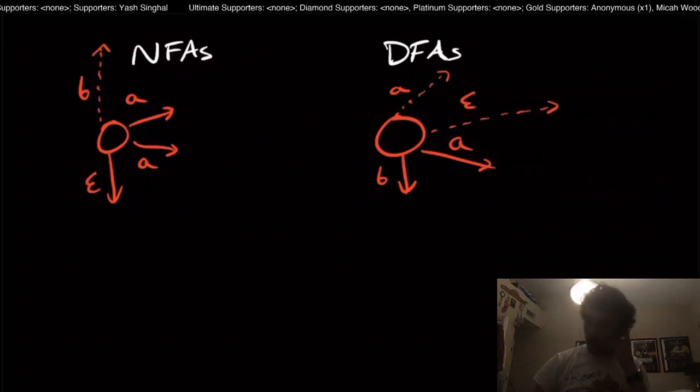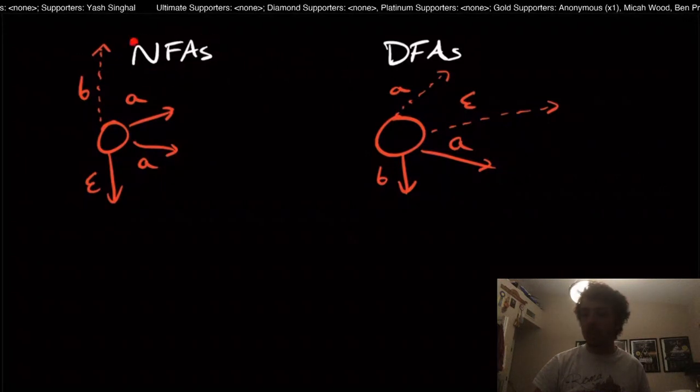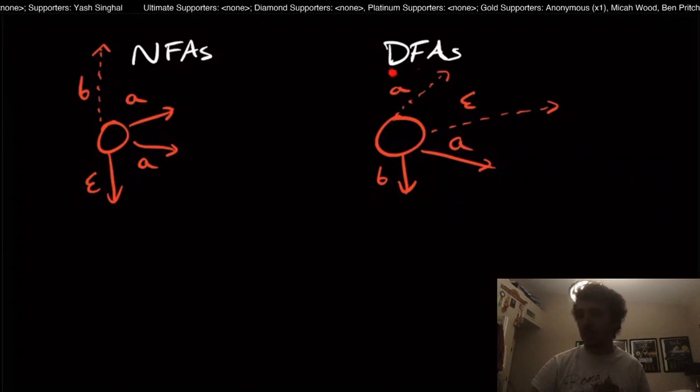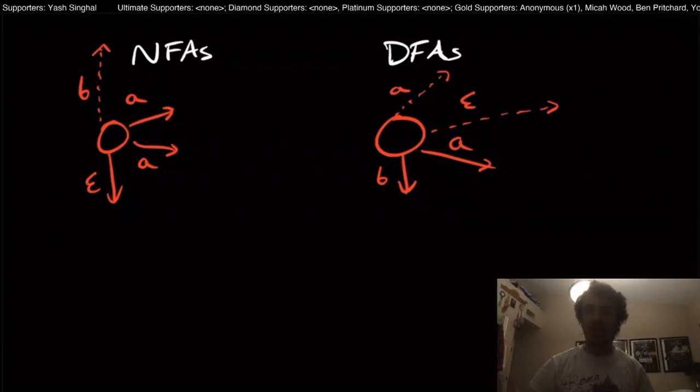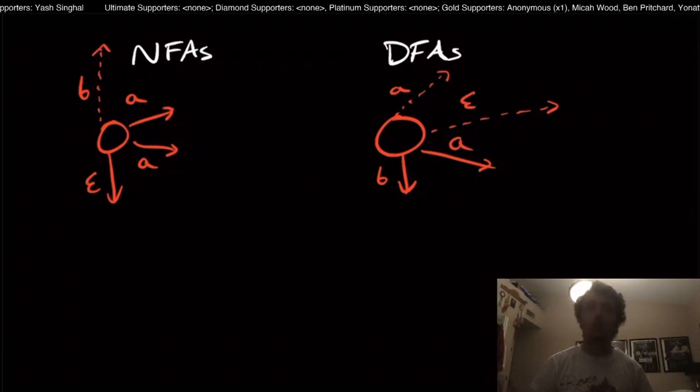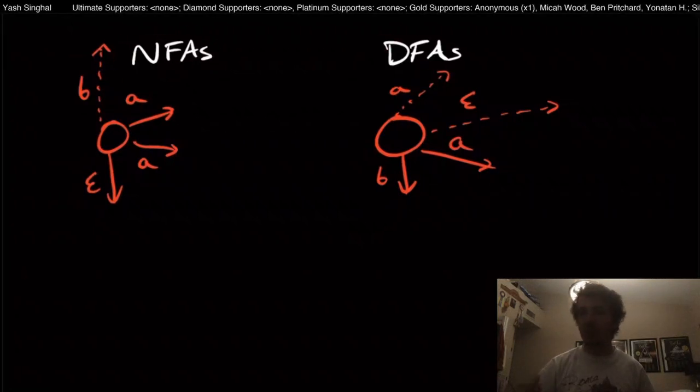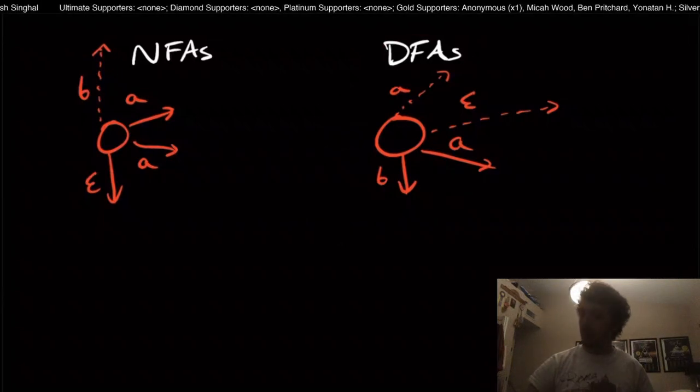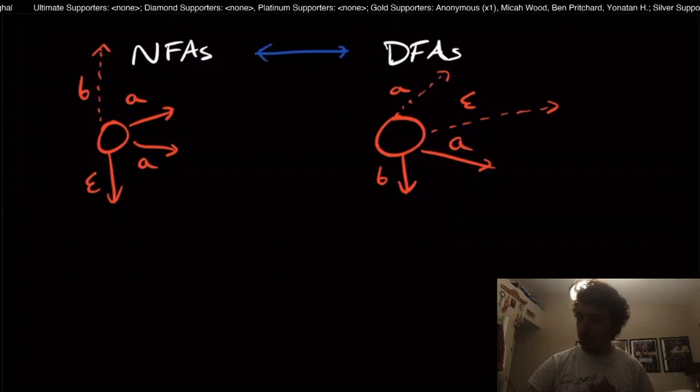And we can solve a bunch of different languages a lot more simply using NFAs compared to DFAs, such as all those strings that contain, say, 101 as a substring. NFAs are really easy for that, whereas DFAs, you actually have to think about it. So the question is, what is the relationship between the two here?